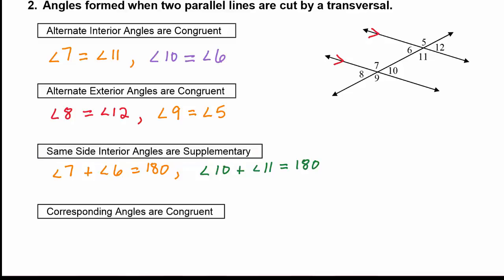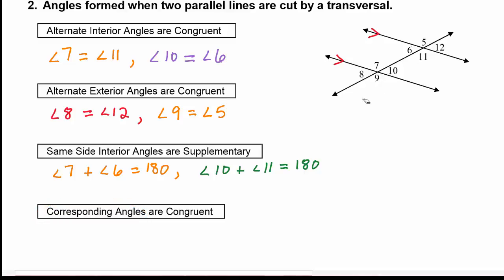The last special angle pair is called corresponding angles. Corresponding angles are in the same relative position at each intersection. For example, angle 9 is in the lower left, so angle 11 corresponds to it because it's also in the lower left position. Corresponding angles are congruent, meaning their angle measures are equal — so angle 9 equals angle 11.